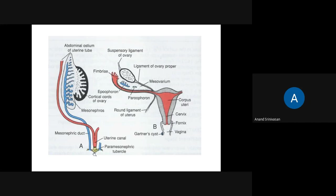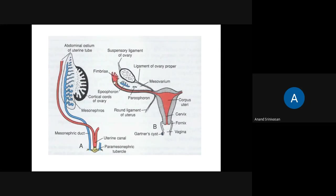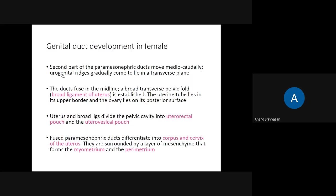The paramesonephric ducts unite near the caudal region. This united part is the one which develops into the uterus and the upper part of the vagina. The cranial part of the paramesonephric duct is the one which develops into the fimbria and the ampulla. The next part moves closer towards the urogenital ridge and fuses in the midline to form the uterus.